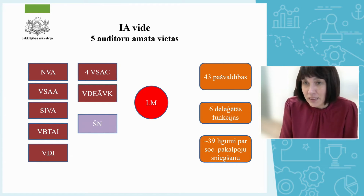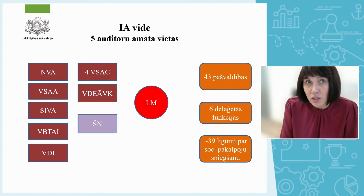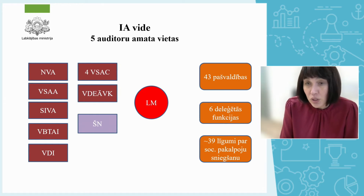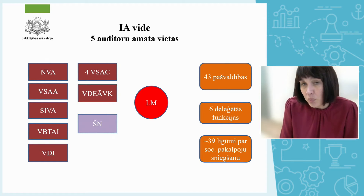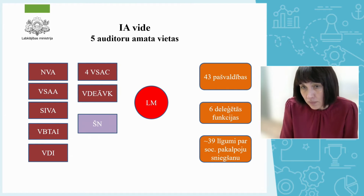We are the Ministry of Welfare, and there are 12 institutions that are underneath us. We have one state capital company because the Ministry is a shareholder in this institution. We also carry out several social area audits, meaning that municipalities are also being audited by us because they coordinate many things, for example, children's protection issues, as well as provide several welfare services. We have six delegated functions to NGOs.